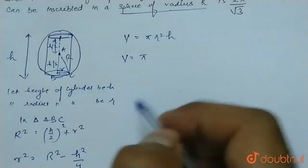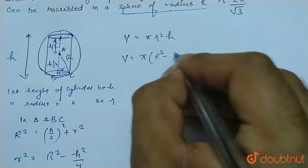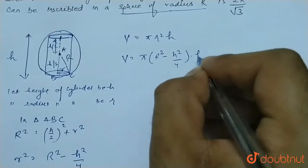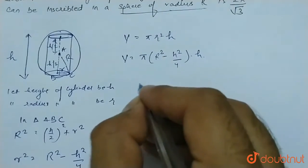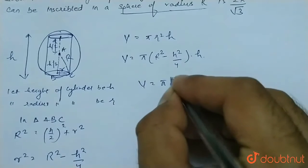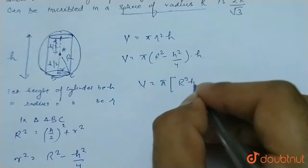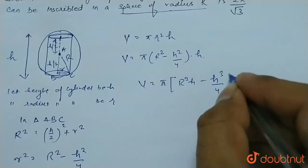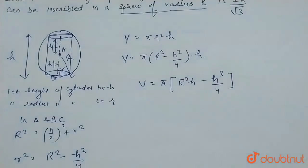So in place of r², write capital R² minus h² by 4 into h. Now multiply h: πR²h minus πh³/4. So this is the volume of cylinder.